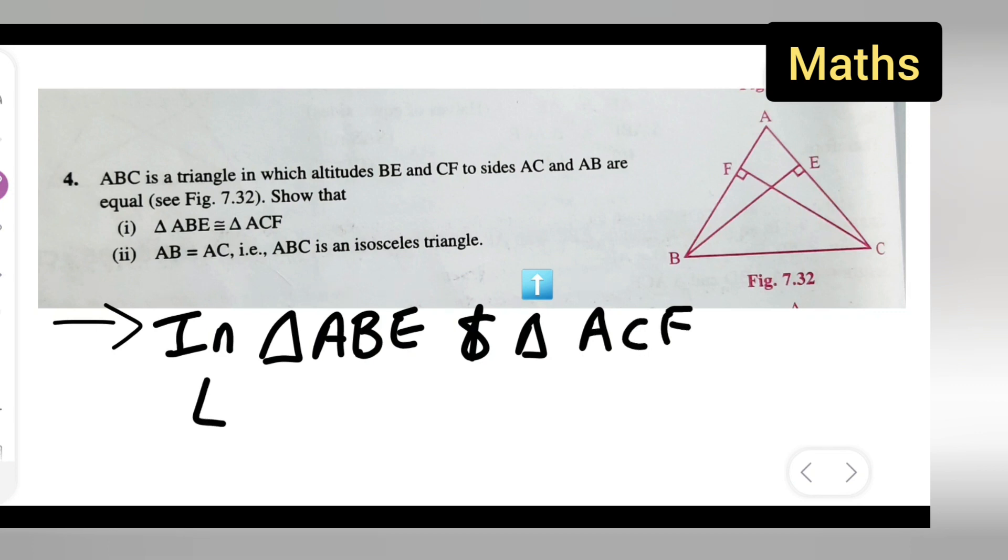Now angle E is equal to angle F. Now here in the question itself you can see angle E is equal to angle F. Angle E and F are 90 degrees, so what is the reason? Each 90 degrees.